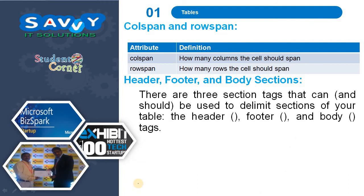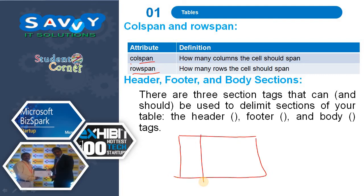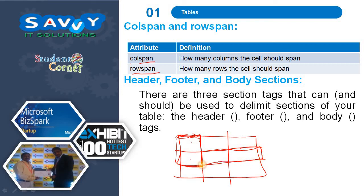Column span and row span. Column span defines how many columns a cell should span. Row span defines how many rows a cell should span. For column span, if we take a table and need to span two cells, we apply column span and those two cells become a single cell. Similarly, row span means merging two cells vertically into a single cell.